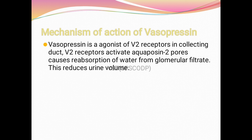Vasopressin, as an agonist of the V2 receptor in the collecting duct, activates the V2 receptor. When V2 receptors are activated, aquaporin pores are activated, causing reabsorption of water from the glomerular filtrate into blood capillaries. The filtrate becomes concentrated, its volume decreases, and diuresis is prevented — vasopressin is an anti-diuretic drug that prevents water volume loss.